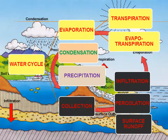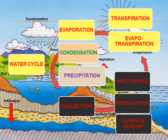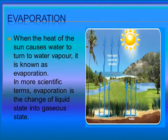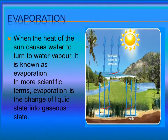I will give a brief about the water cycle. The stages include: Evaporation, Condensation, Precipitation, Conduction, Transpiration, and Evapotranspiration, as well as Collection, Infiltration, Percolation, and Surface Runoff. First, the heat of the Sun changes water into water vapor — this process is called evaporation.